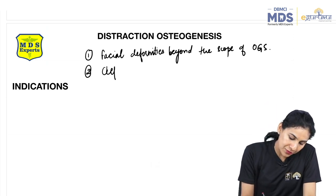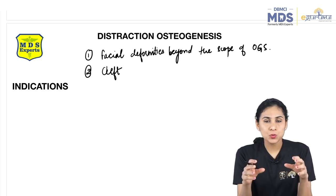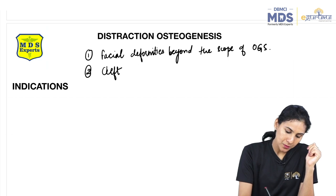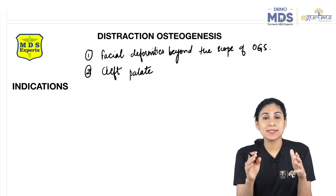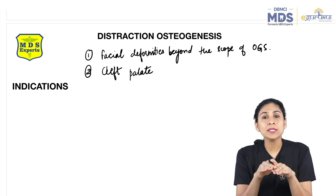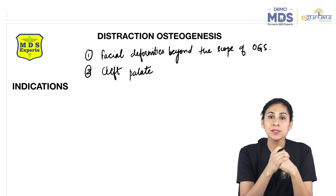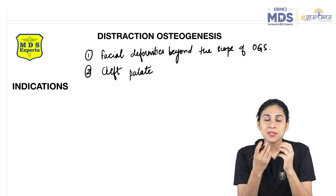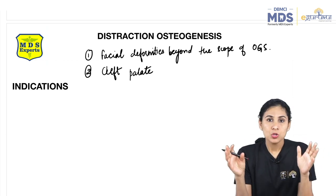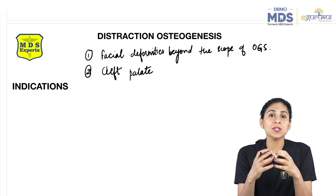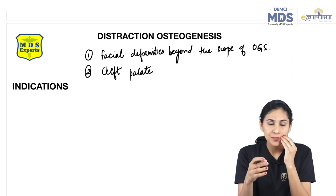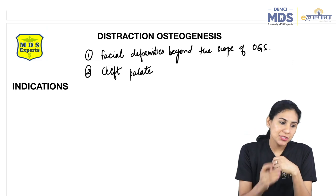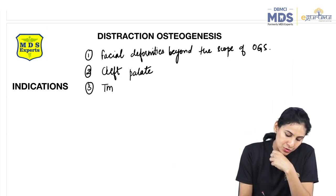The second indication is in cleft palate cases. After cleft palate surgery to close the communication between oral, nasal, and sinus cavities, scarring in the palate prevents full-fledged maxillary growth. This causes maxillary hypoplasia. So in cleft palate patients, after growth is completed, you can correct the maxillary hypoplasia by distraction osteogenesis.